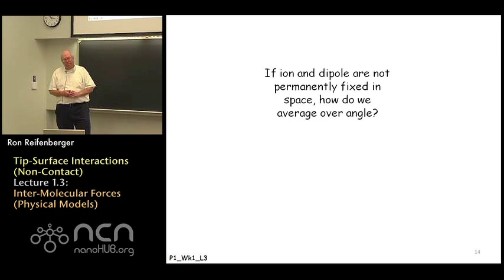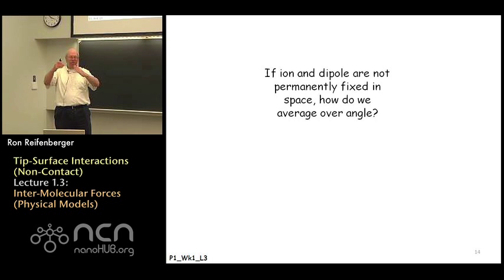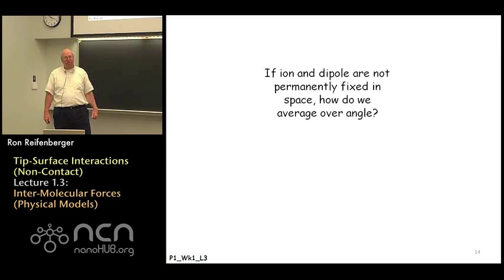This discussion begs the question: if this ion-dipole interaction depends on angle — depends on the relative orientation of the dipole with respect to the point charge — and if the molecule that has the dipole moment is free to rotate in space, how do we take into account the fact of this rotation? How do we angle-average this interaction over all angles so that we get some average interaction we can use to discuss interaction potentials and interaction forces? In the next lecture we're going to discuss in some detail how we do the angle average and the proper mathematics required to pull that off. So for lecture four that will be the topic, and until the next lecture we'll see you later.